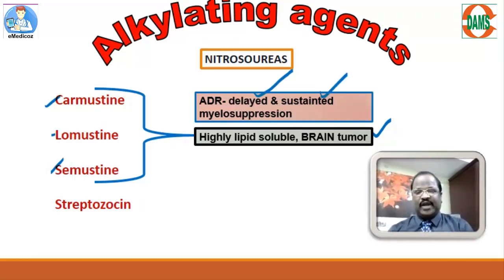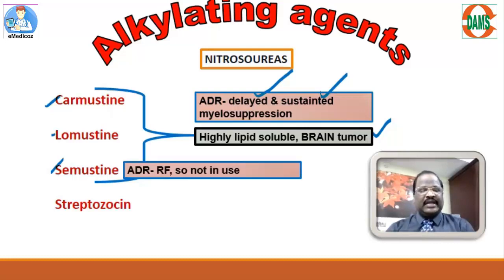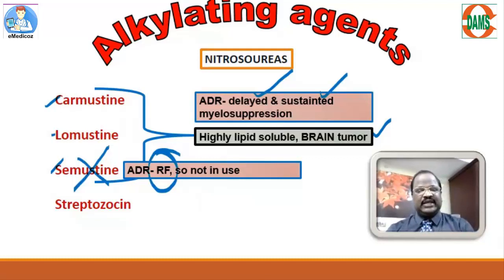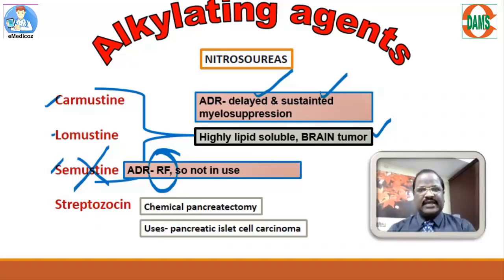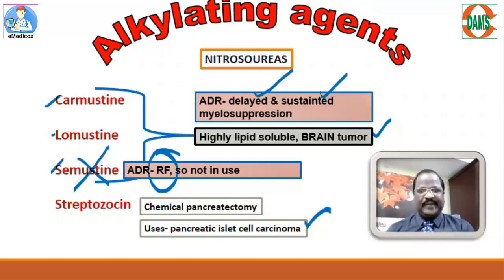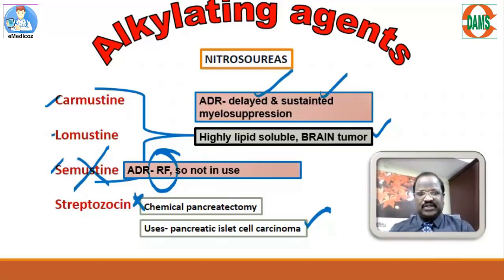The common adverse effect of carmustine, lomustine, and semustine is myelosuppression. They cause delayed and sustained myelosuppression, unlike most anti-cancer drugs which cause myelosuppression within a week. Semustine causes renal failure and is therefore not used clinically. Streptozocin is called a chemical pancreatectomy agent, useful for treatment of pancreatic islet cell carcinoma.